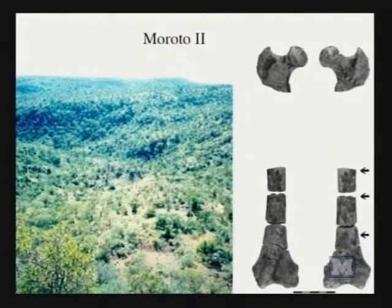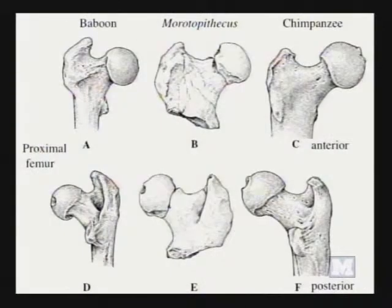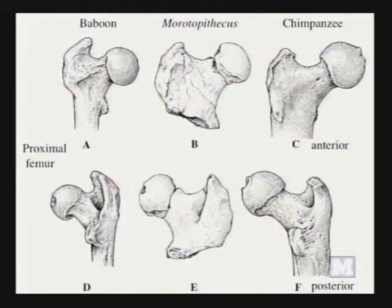We were prospecting for the locality because we didn't have precise maps — we just knew generally where it was. From the top of a hill we looked down and thought, those look like sediments, let's go down there. And this was in fact the locality — within an hour of taking this picture, we'd found the femora. As paleontologists, we look at the details of the anatomy and try to reconstruct the functional potential for a given region. We can look at the top part of the femur and try to reconstruct what hip mobility would have been like.